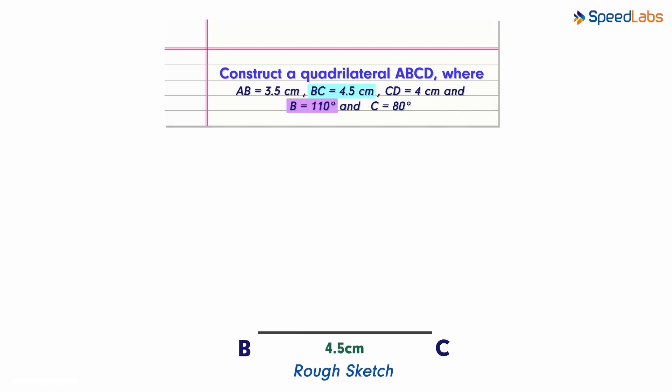Angle B measures 110 degrees. So we draw a ray like this with the same measure. Now AB is given to us as 3.5 cm. So we mark A here, assuming AB measures 3.5 cm.